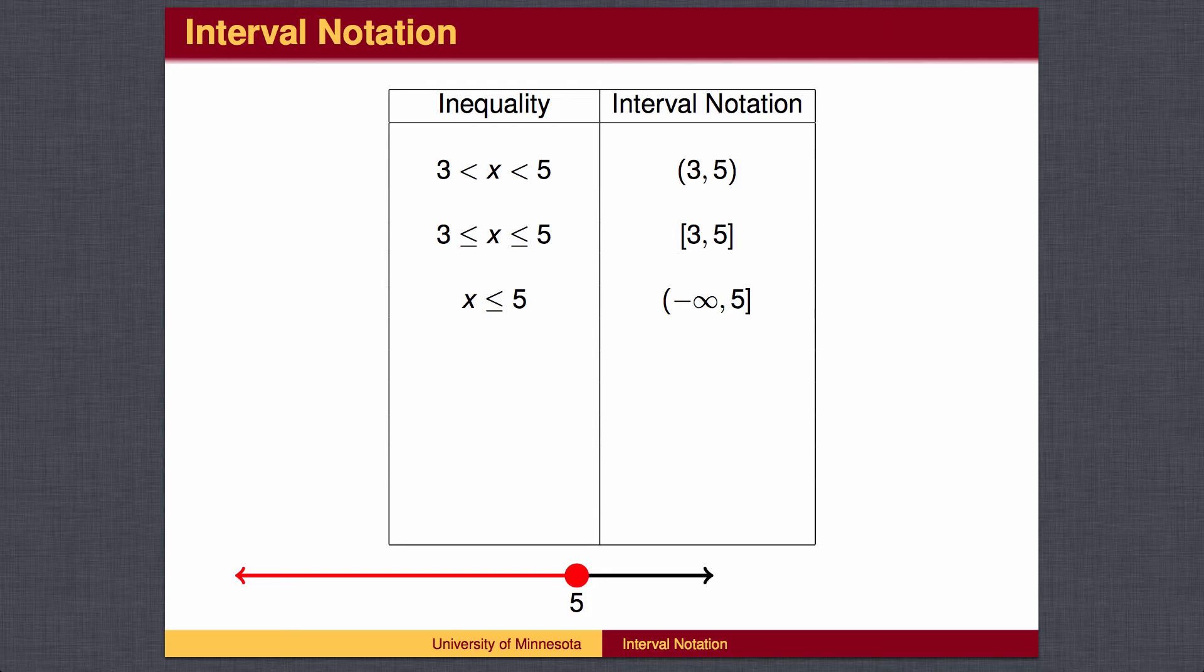If only one inequality is present, we use plus or minus infinity for the other end. In this case, the right boundary is 5, but x is allowed to be as small as we want. Negative infinity expresses the idea that we can go as far left as we want. Note that infinity is not a number, so we never use the pointed brackets. You can never include infinity in the interval.